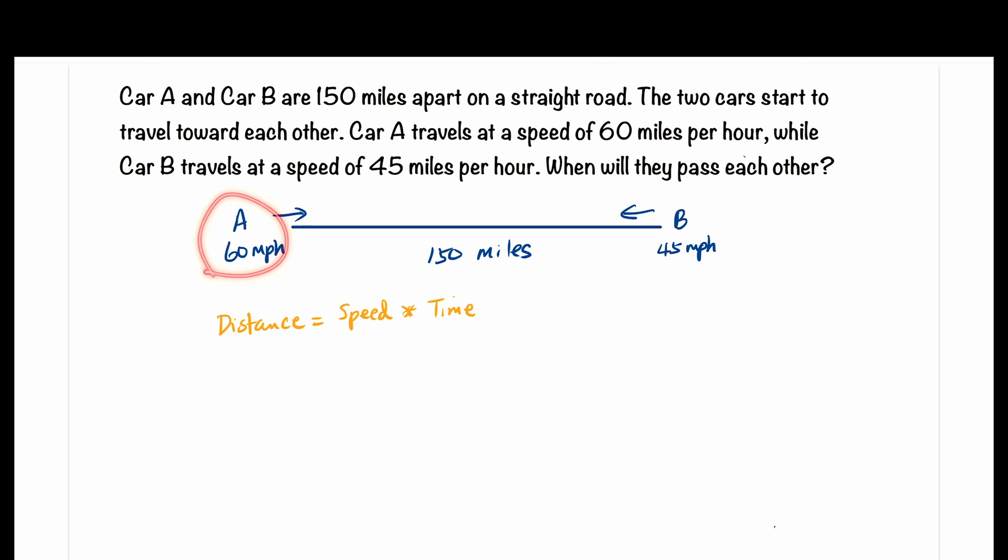In our example, we have two cars with different speeds traveling toward each other. So what do we use for speed? Well, let's look at the problem this way. In one hour, Car A will cover 60 miles. Car B will cover 45 miles.